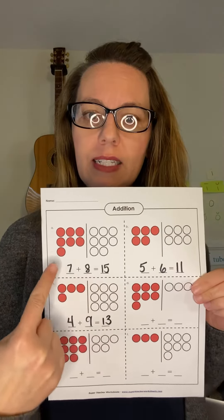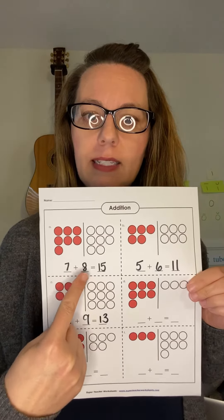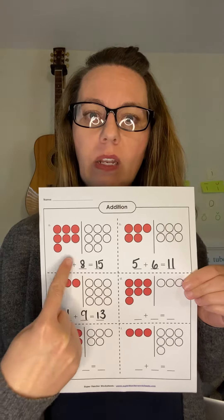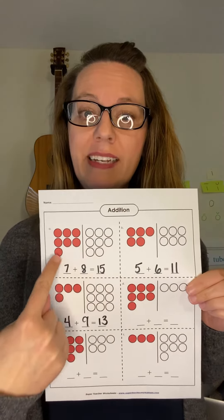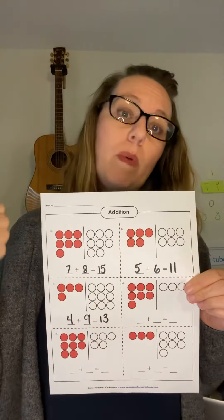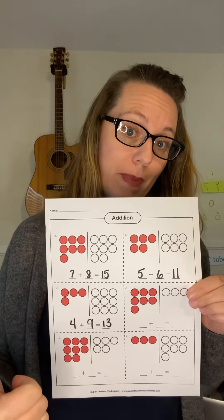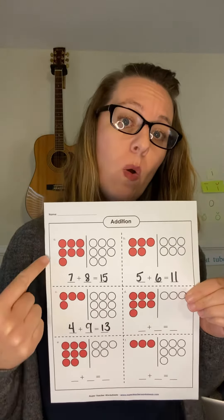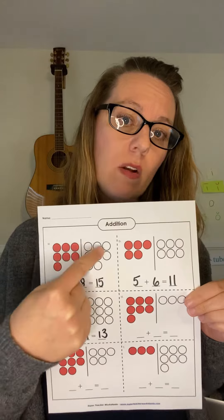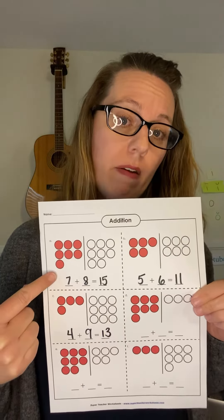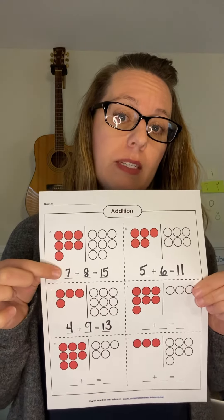So this number sentence is seven plus eight, and then we know seven plus eight is 15. Either we know it because we've been working on our facts in extra math or with flashcards, or we counted all of the counters together.